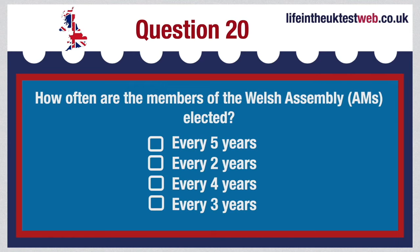How often are the members of the Welsh Assembly (AMs) elected? Every five years, every two years, every four years or every three years? The correct answer is: The National Assembly for Wales has 60 Assembly members (AMs), and elections are held every four years, using a form of proportional representation.